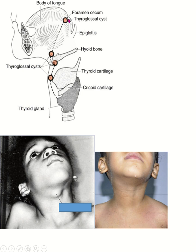A thyroglossal cyst may be found above the hyoid bone, below the hyoid bone, or in front of the thyroid cartilage. In a thyroglossal cyst, the swelling is always in the midline, and there is a connection present with the tongue — so movement of the tongue causes this swelling to also move along with it.